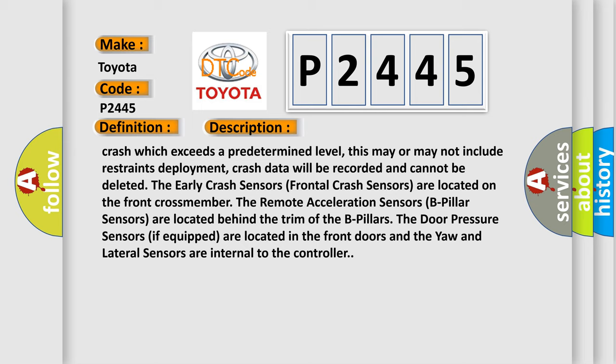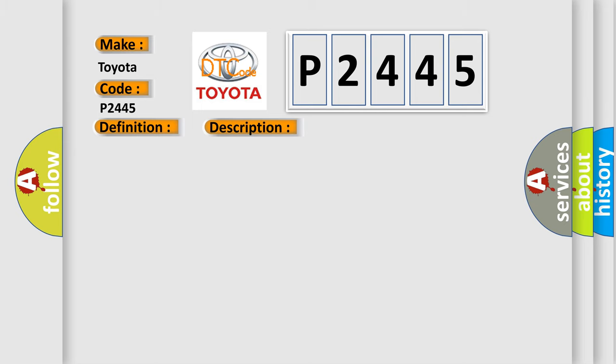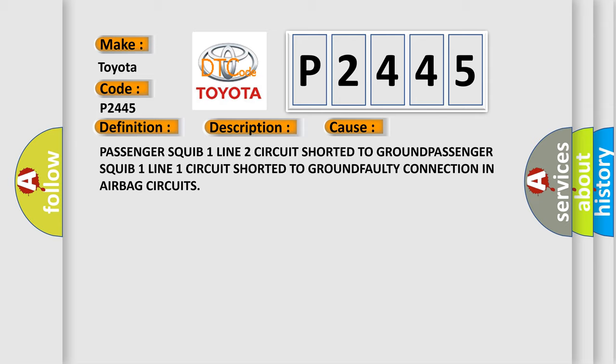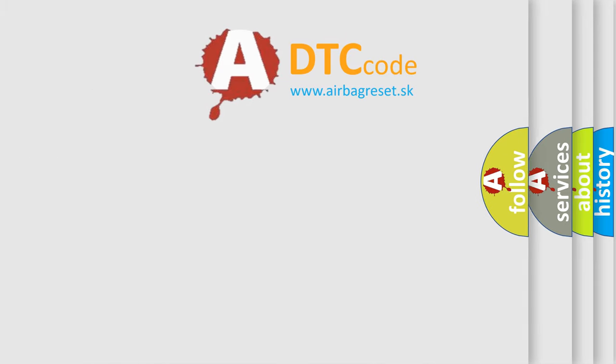This diagnostic error occurs most often in these cases: passenger squib 1 line 2 circuit shorted to ground, passenger squib 1 line 1 circuit shorted to ground, or a faulty connection in the airbag circuits. The Airbag Reset website aims to provide information in 52 languages.